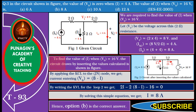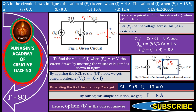To find the value of I when Vs equals 16 volts, the circuit drawn by inserting the calculated values is shown in the figure. By applying KCL to the junction node, we get the current entering Vs equals (8 minus I) amperes. By writing the KVL for the outer loop,